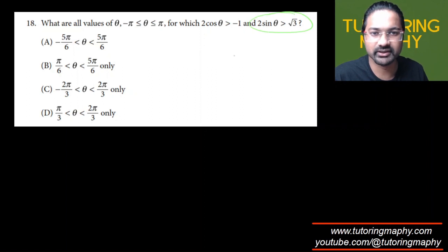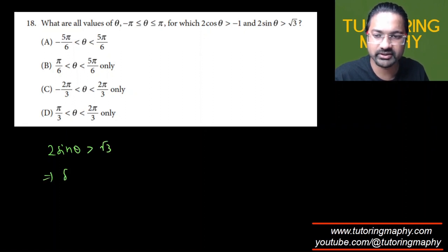Let's talk about this thing. This looks at least relatively easy to deduce that 2 sine theta should be greater than root 3, which means that sine theta should be greater than root 3 over 2 from negative pi to pi.